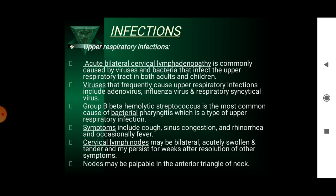Upper respiratory infections such as acute bilateral cervical lymphadenopathy are most commonly affected by viruses and bacteria that infect the upper respiratory tract in both adults and children. The most common viruses are adenovirus and influenza virus, and also group B beta-haemolytic streptococcus, which causes bacterial pharyngitis. Symptoms include cough, sinus congestion, rhinorrhea and occasional fever. Cervical lymph nodes may be bilateral, acutely swollen and tender, and may persist for weeks after resolution of other symptoms. Nodes may be palpable in the anterior triangle of the neck.